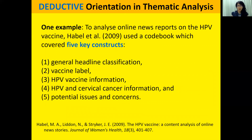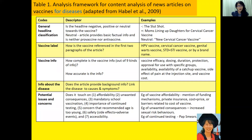This is best understood in the context of a specific example. I have taken Hebel et al. 2009 coding of HPV vaccine, and they use five constructs, as you can see here. Based on the paper, I have developed an analysis framework that makes things clearer to me when applied to COVID-19 vaccine. I find the very first code vague, but when I read the paper it is clear what they mean — general headline classification refers to whether the headline is negative, positive, or neutral towards the vaccine.